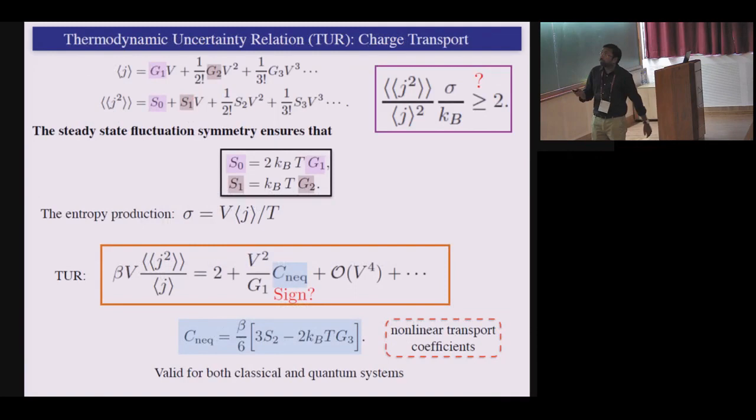So here is what our sort of very simple derivation of trying to investigate what happens to this bound. So once again, we have this current and noise, and we expand it as a function of bias in a series. And I'm now using the fluctuation symmetry in terms of this transport coefficient, how they are related. Once I have this, I'm saying that my system has fluctuation symmetry. So you have these expressions, you have what is the entropy production, which is sort of like the joule heating. And this is your quantity that you want to look at, right? That's the thermodynamic uncertainty relation. So you want this to be greater than two, if it is true.